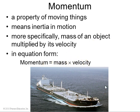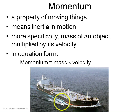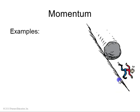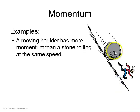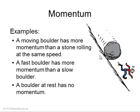Here's an example of a great big supertanker. They actually cut off the engines of a supertanker like this when it's still 25 kilometers away from the port, because it contains a lot of momentum. If it's moving, it's going to keep moving unless there's some outside force to slow it down. A moving boulder has more momentum than a little stone rolling at the same speed, and a faster boulder has more momentum than a slower boulder. A boulder sitting at rest has no momentum.